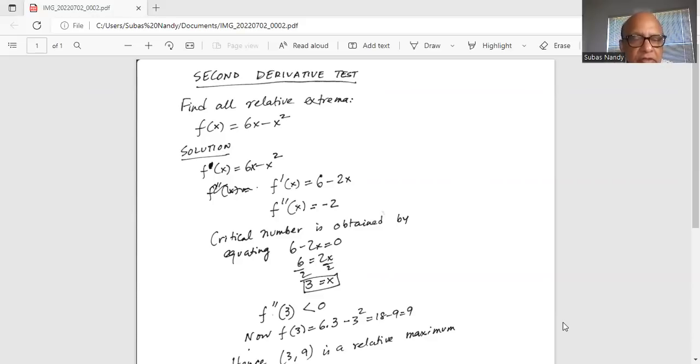So we take the first derivative of f(x) with respect to x, which is 6 minus 2x. Then we take the second derivative of f(x) with respect to x, which is f double prime x equals minus 2.